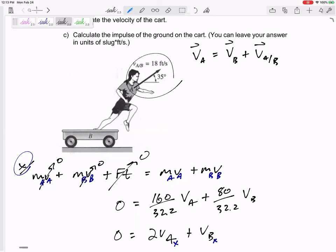So maybe let's only look at the x: va in the x equals vb in the x plus - that one is the x component - 18 cosine 35.